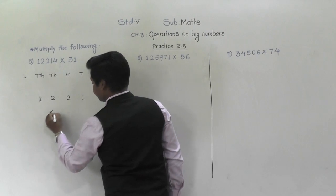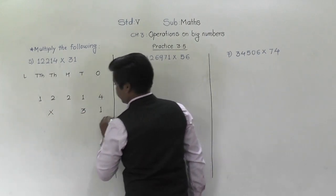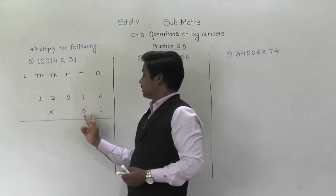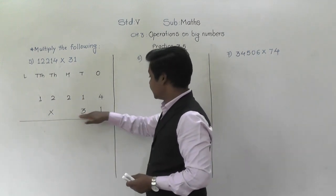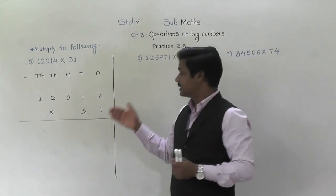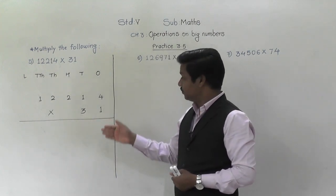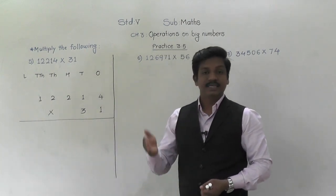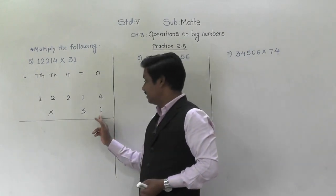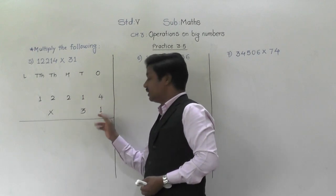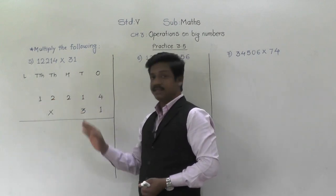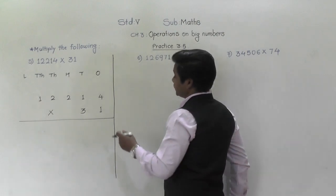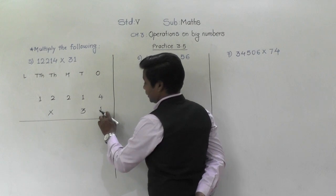So 12,214 into 31. Here, the multiplier is 31 — its table you don't know. In this case, 31 is a two-digit number, so we are going to multiply by each digit separately. First, we will multiply by one — the ones place digit — and then we will multiply by three, and then we will add their products to get the final answer.